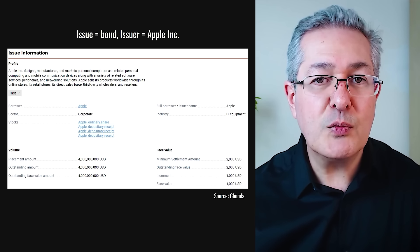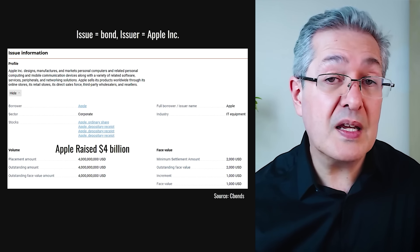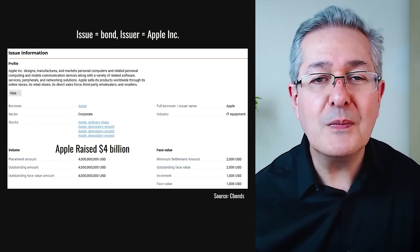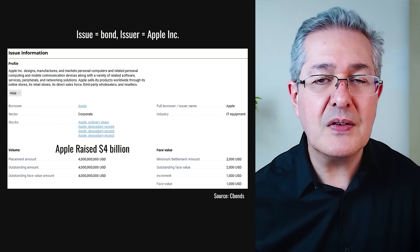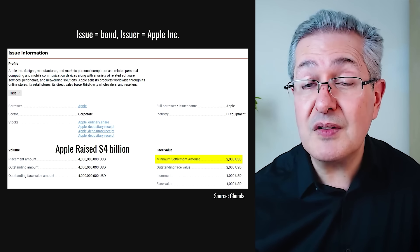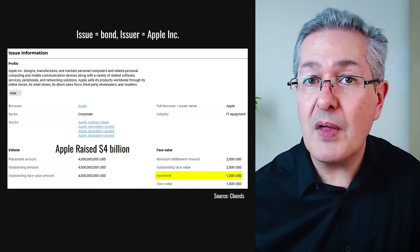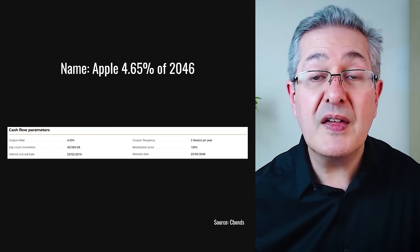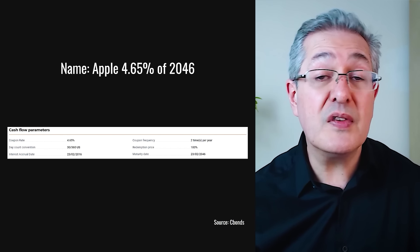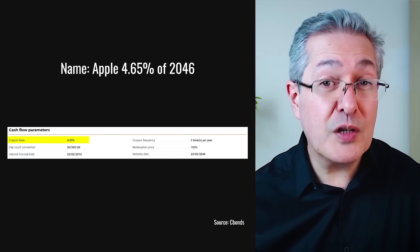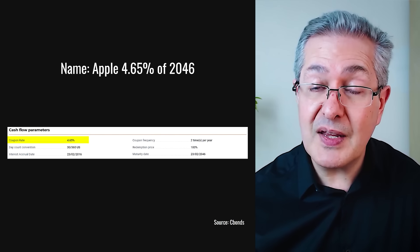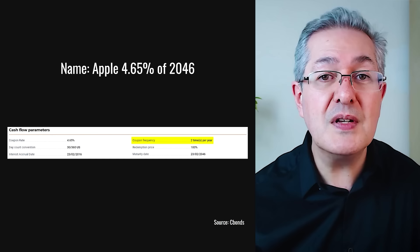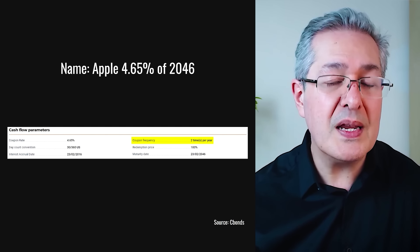The bond we'll start off looking at is one which was issued by Apple, and this raised four billion dollars for the company. You don't buy four billion dollars worth in one go — it's split up into little pieces sold to investors. The minimum settlement amount is two thousand dollars, and then you can buy increments of one thousand dollars, so you could buy two thousand, three thousand, or four thousand dollars face value. The naming convention uses the issuer name, the fixed coupon of 4.65% — which remains fixed for the life of the bond — and the maturity date of 2046. If you had a hundred dollars worth of this bond you'd receive four dollars and sixty-five cents in two installments every six months.